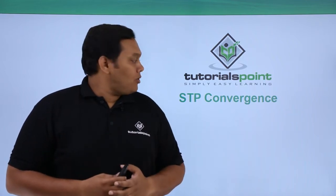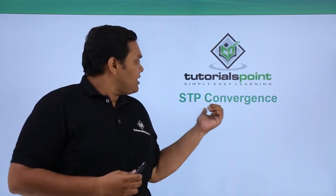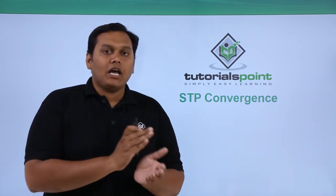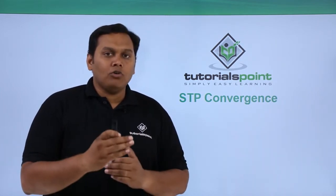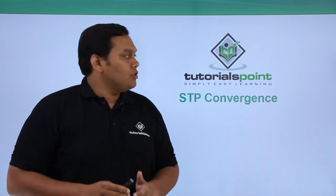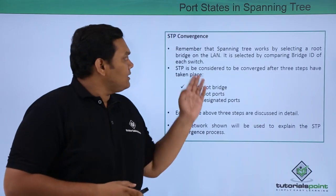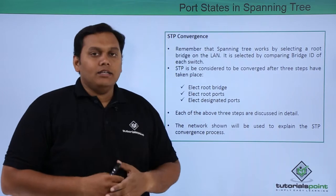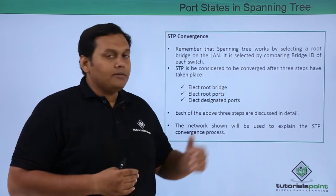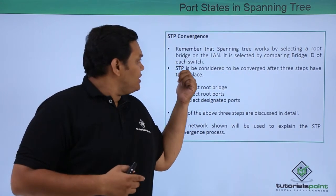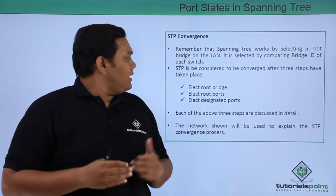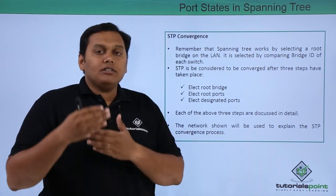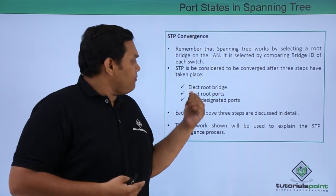In this video, we are going to discuss STP convergence — how STP convergence comes in place after the three steps followed in the spanning tree protocol. Spanning tree works by selecting a root bridge on the LAN, selected by comparing the bridge ID of each switch. STP is considered to be converged after three steps have taken place.